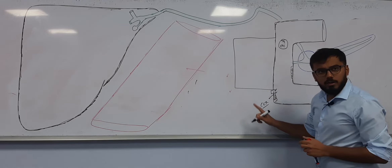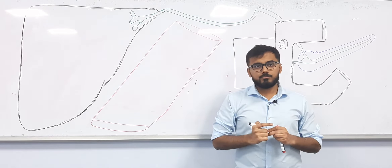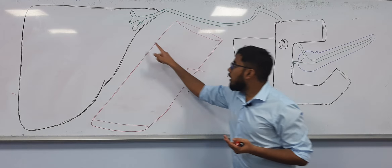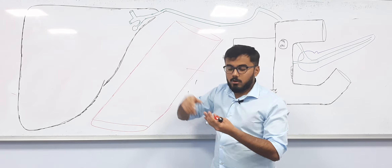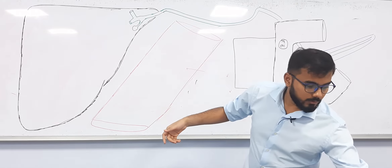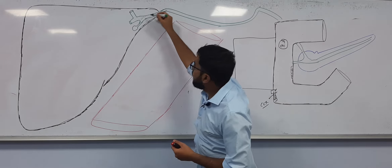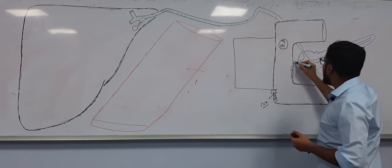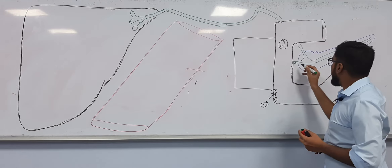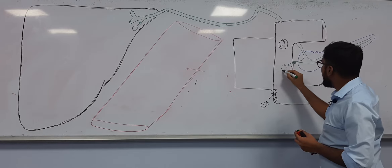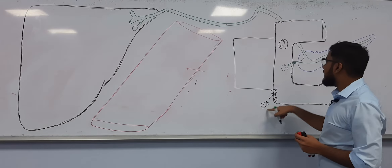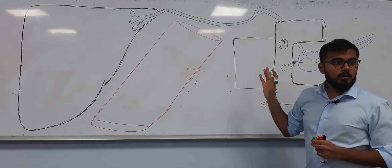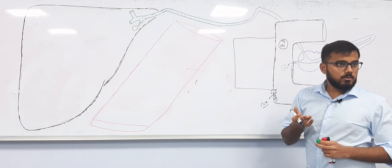CCK has two functions: one, it contracts the gallbladder, which releases bile that travels along the common bile duct into the duodenum. Two, it causes relaxation of the sphincter of Oddi. These are the biliary tract mechanisms we discussed in previous classes.